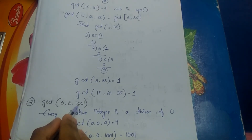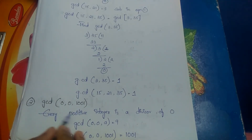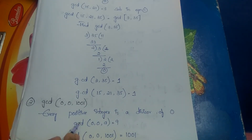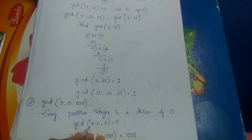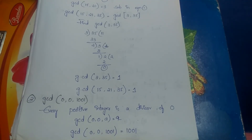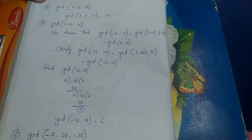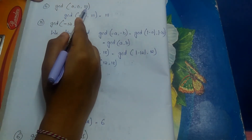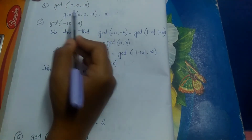Special case: gcd(0, 0, 1001). We know that every positive integer divides 0, and gcd(0, a) = a. Similarly, gcd(0, 0, a) = a. Therefore gcd(0, 0, 1001) = 1001. Likewise, gcd(0, 0, 111) = 111.